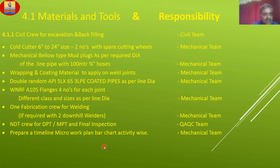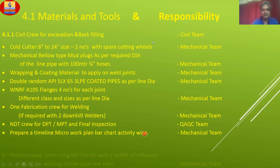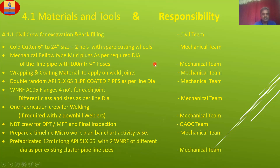We should ensure preparation of a timeline micro work plan or bar chart for active devices. This should be prepared by the Mechanical Planning Team. We cannot waste time thinking on the spot — we should predict whatever activities we have to do and how to repair, then accordingly prepare a micro work plan and bar chart. Pre-fabricate a 12-meter long API 5L X65 pipe with two weld-lap flanges, different sizes as per the existing cluster pipeline sizes.